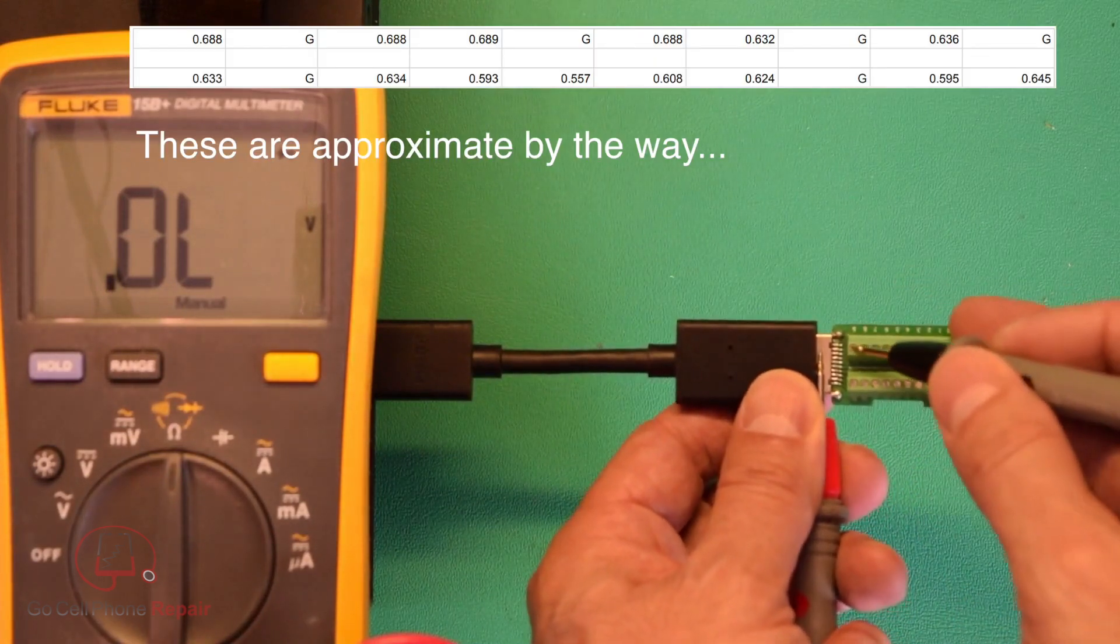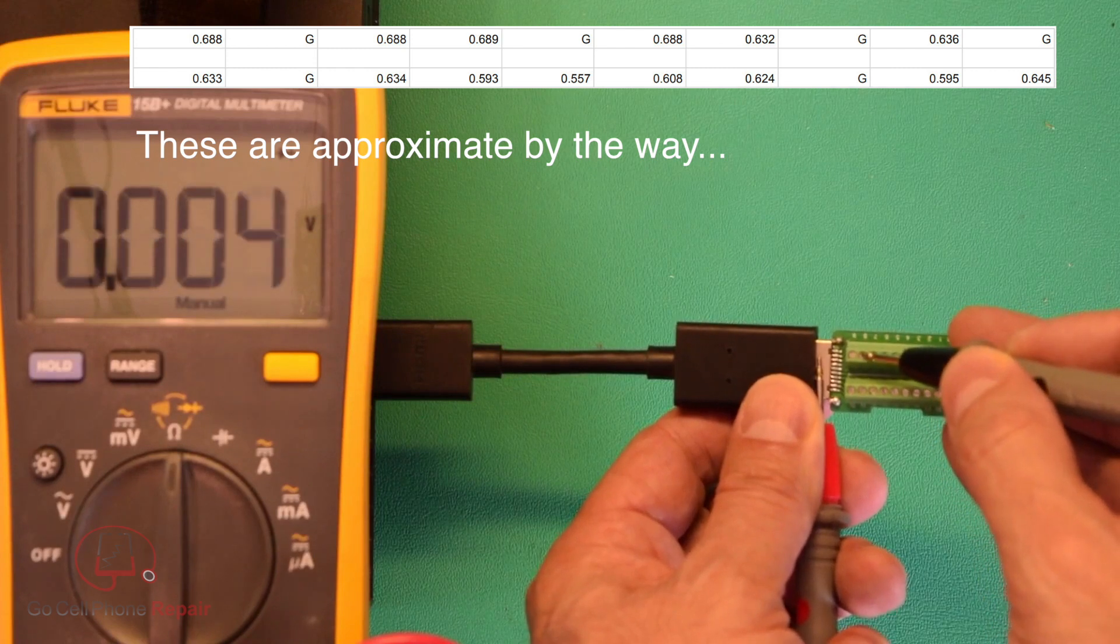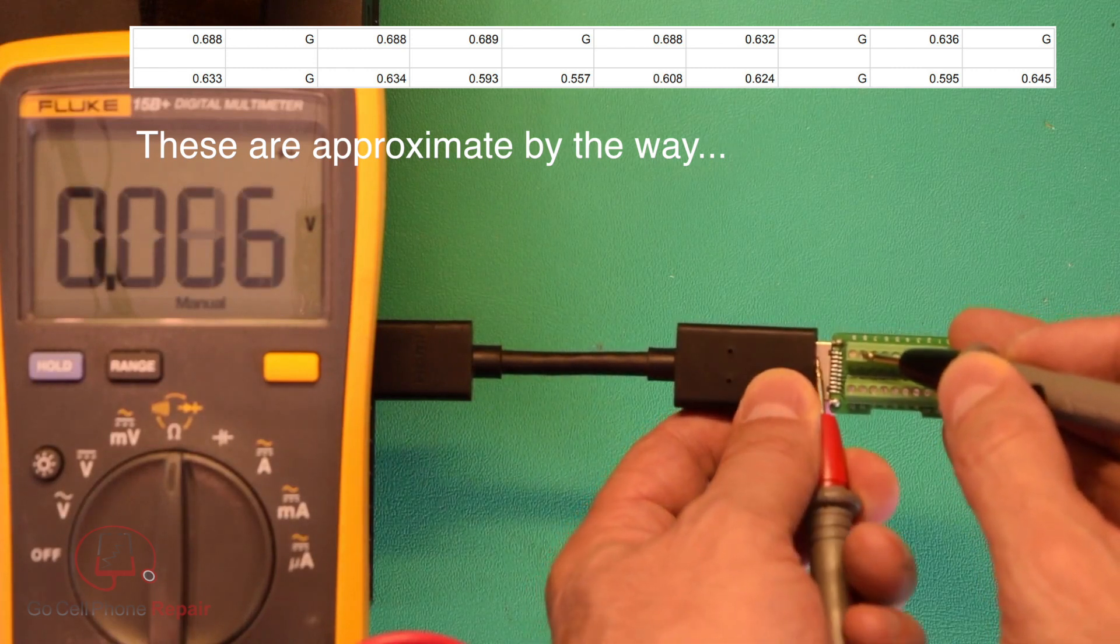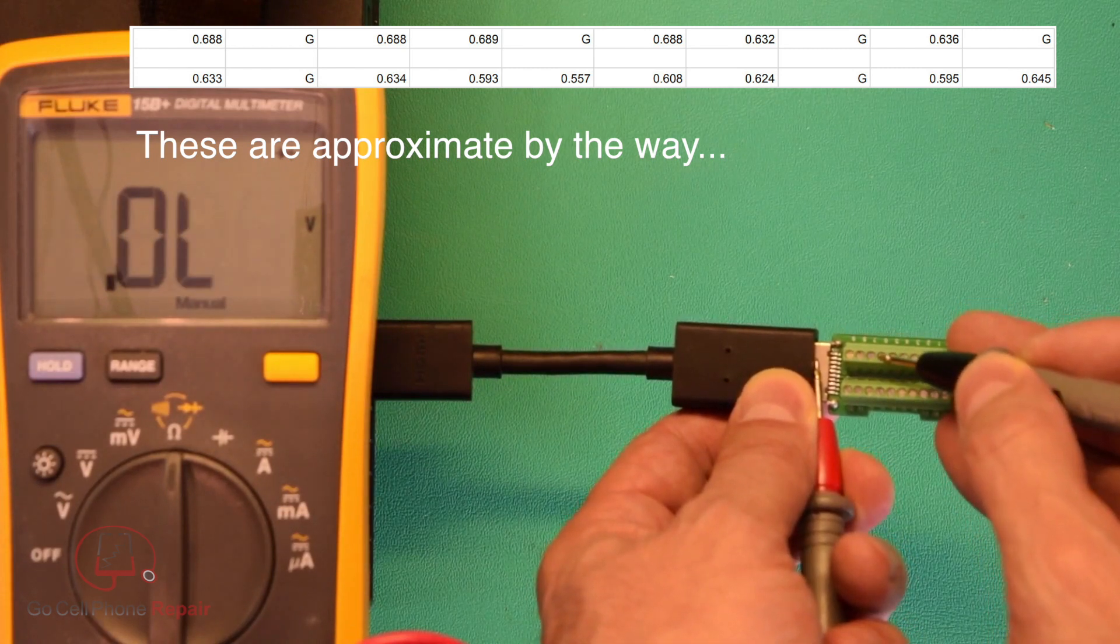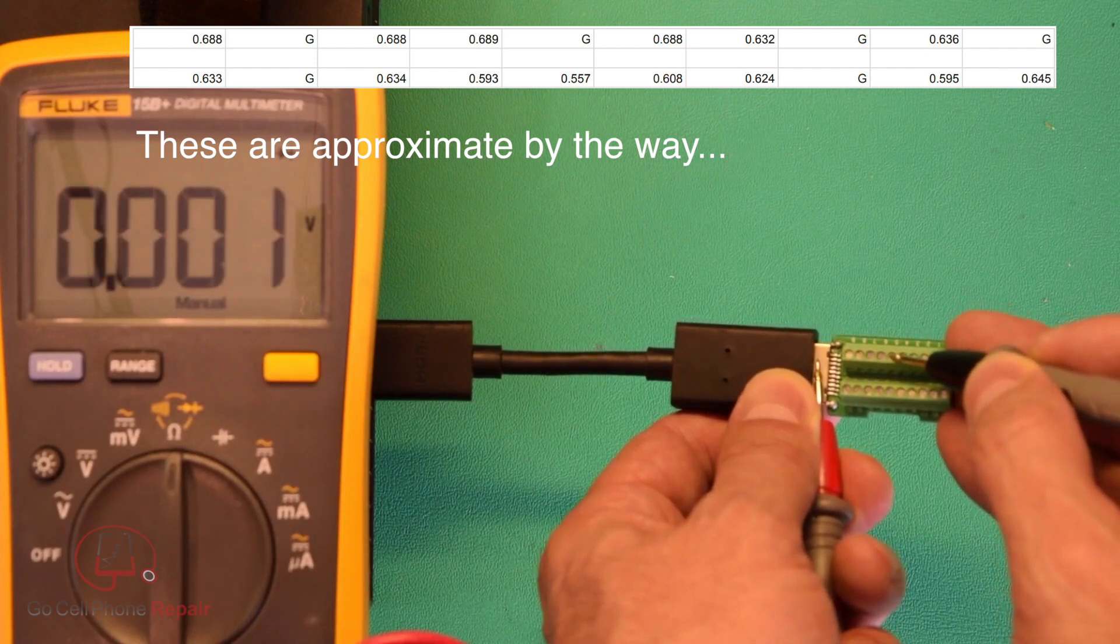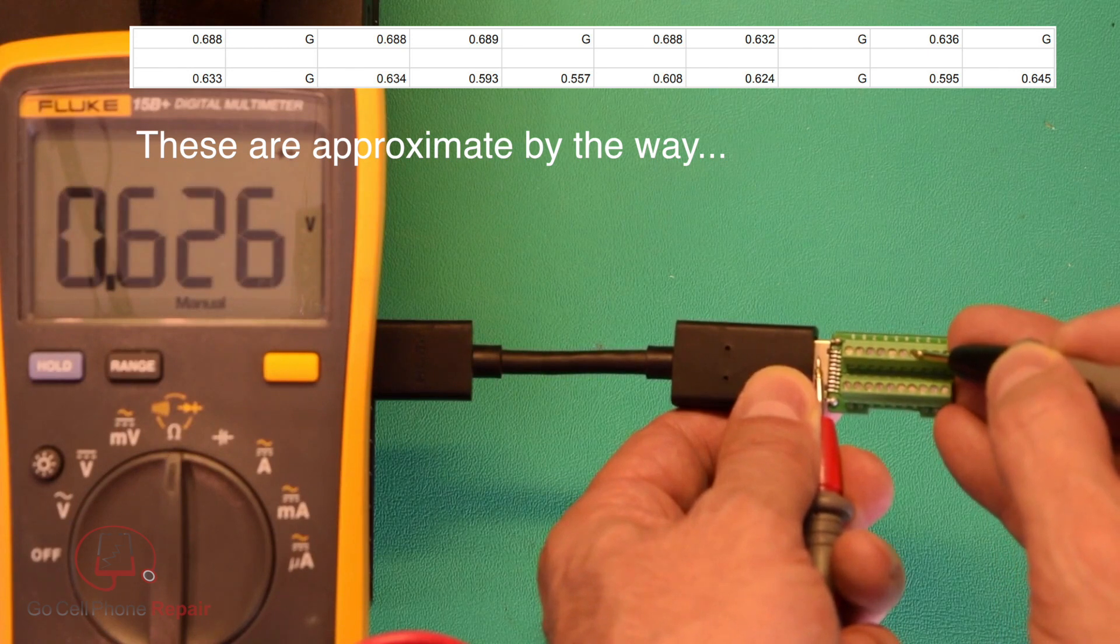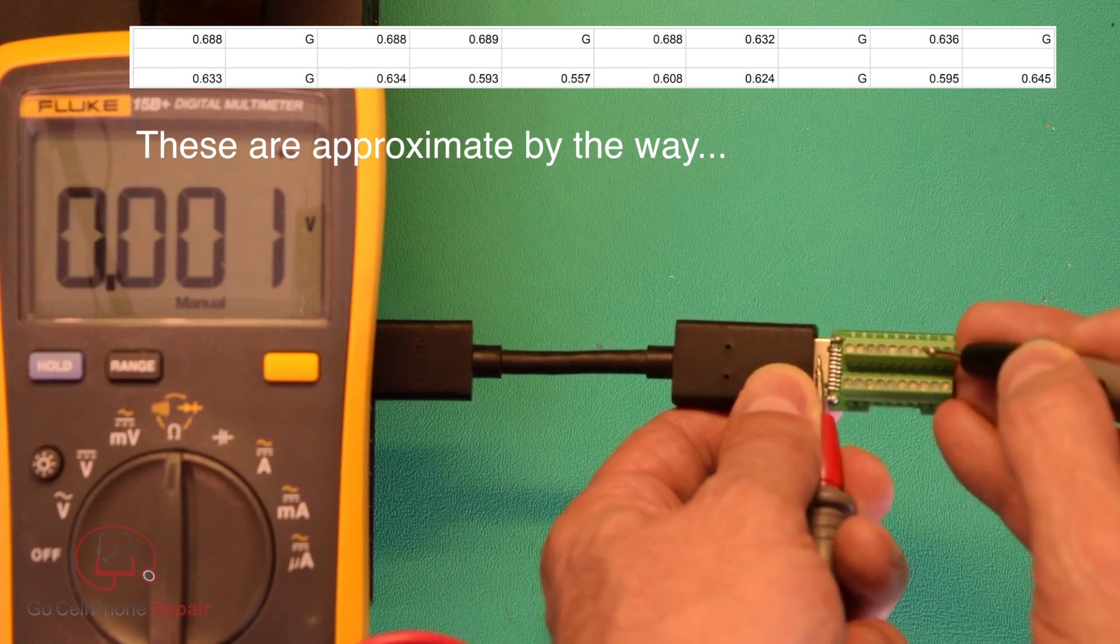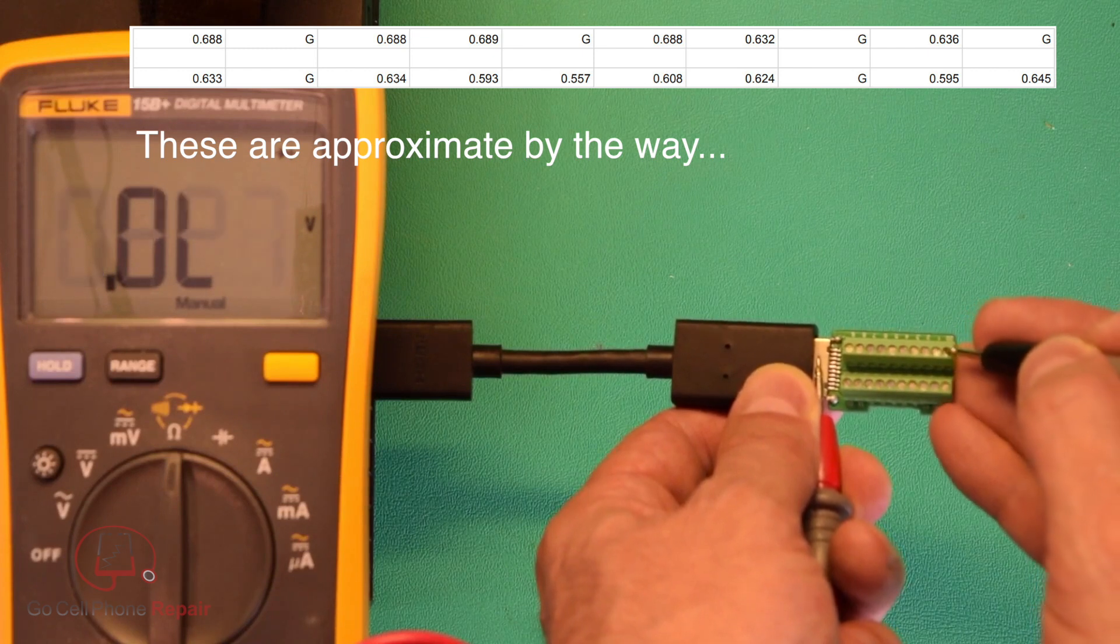What you'll typically see is something in the 700 range. This is 710. Then we've got a ground and then we'll have two more in a row. There's a pattern that follows as you go across. This is 625, ground, 623, 626, ground, 625. Then you'll have another ground on the end. So it kind of skips, but usually you go two numbers and then a ground.